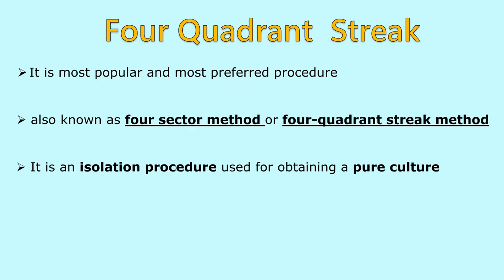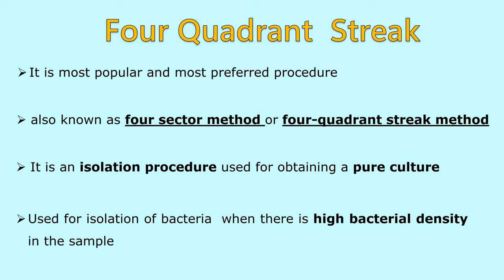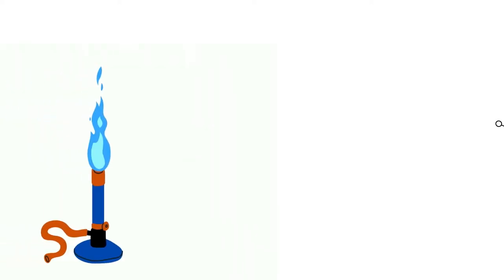4 Quadrant Streak Plate Method is performed when there is high bacterial density in the sample.